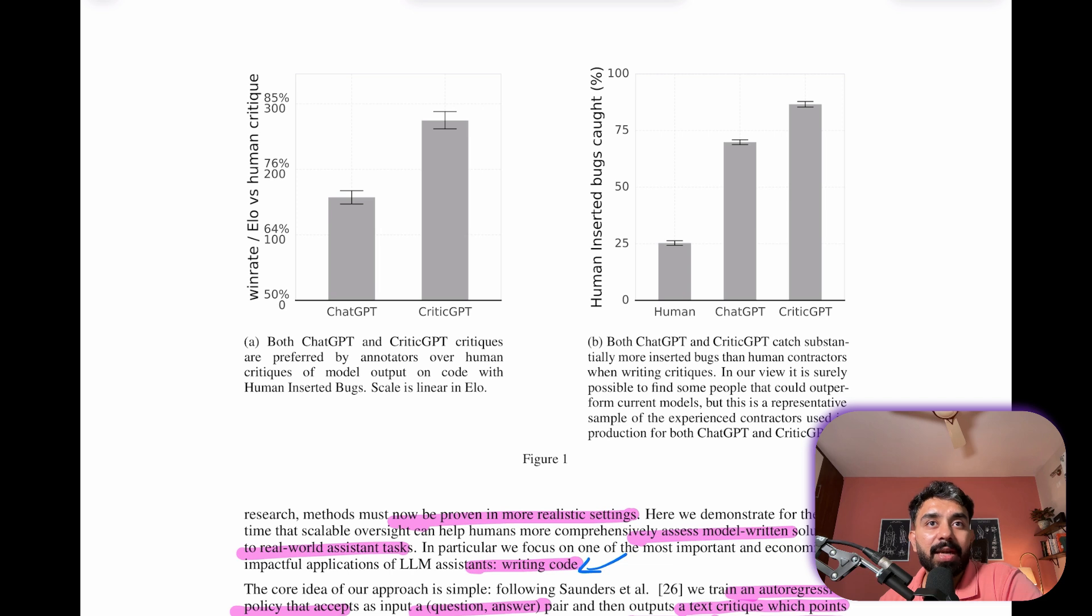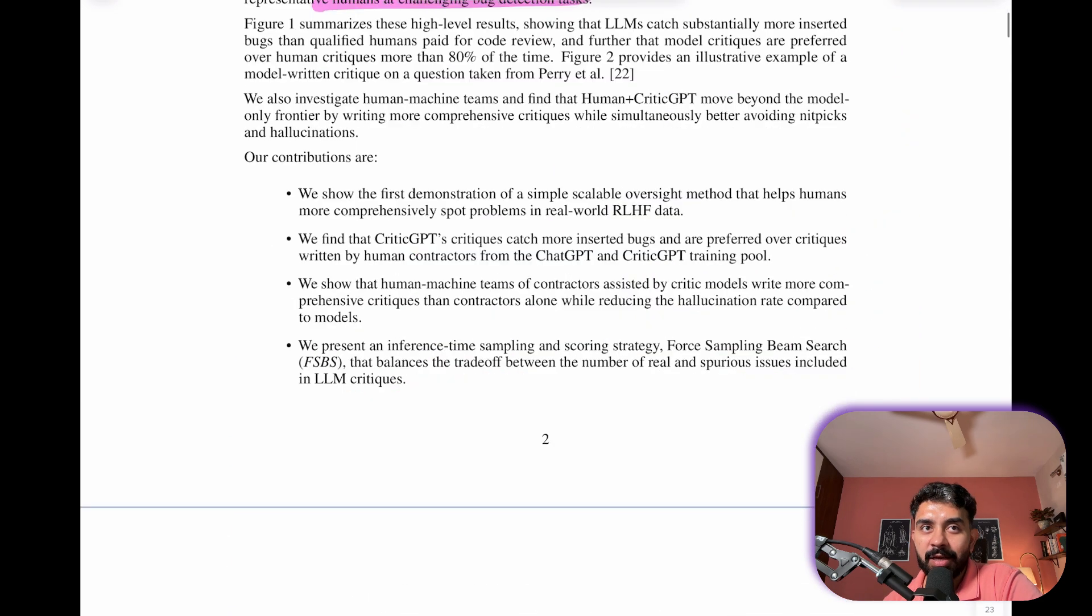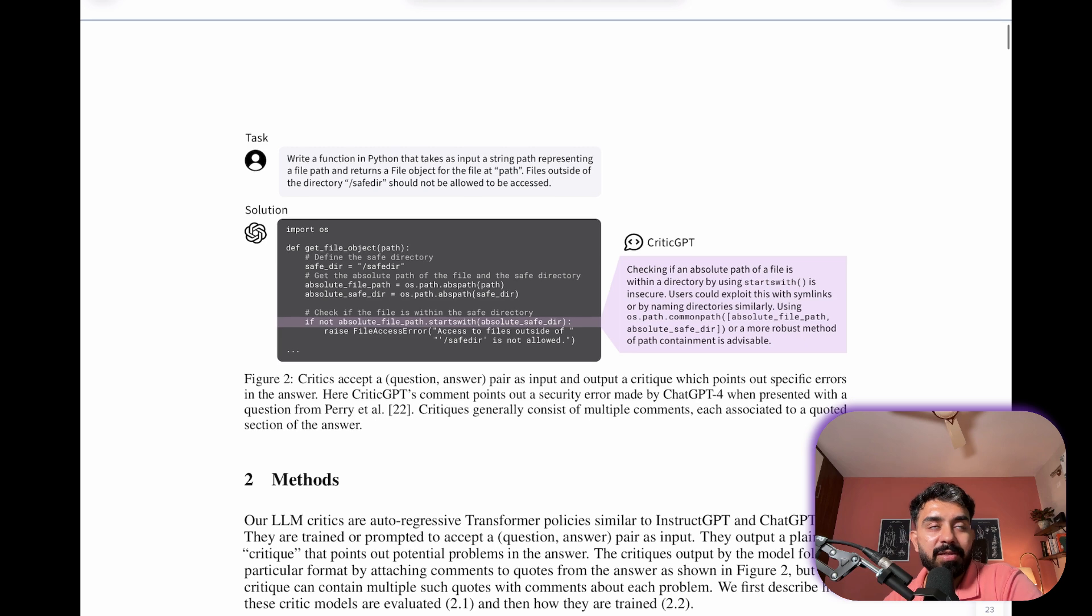Here you can see in this figure they've shown that LLMs catch significantly more inserted bugs than humans and that model critiques are preferred over human critiques more than 80 percent of the time. And human-machine teams, basically combining humans with CriticGPT, the model that they train, those combinations of humans and CriticGPT write more comprehensive critiques and avoid the nitpicks and hallucination better than the models alone.